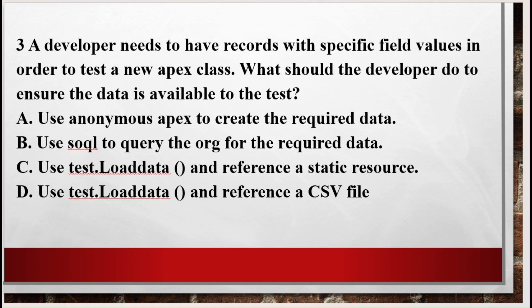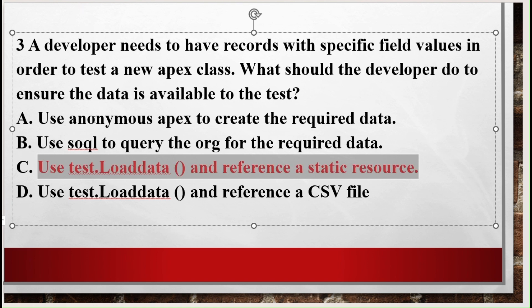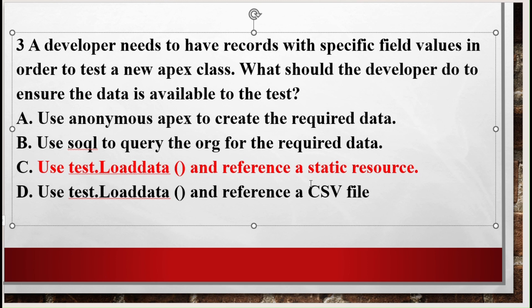Question number three: a developer needs to have records with a specific field value in order to test a new Apex class. What should the developer do to ensure the data is available to the test? Option A - use anonymous Apex to create required data. Option B - use a SOQL query for required data. Option C - use Test.loadData and reference a static resource. Option D - use Test.loadData and reference a CSV file. The correct option is C.